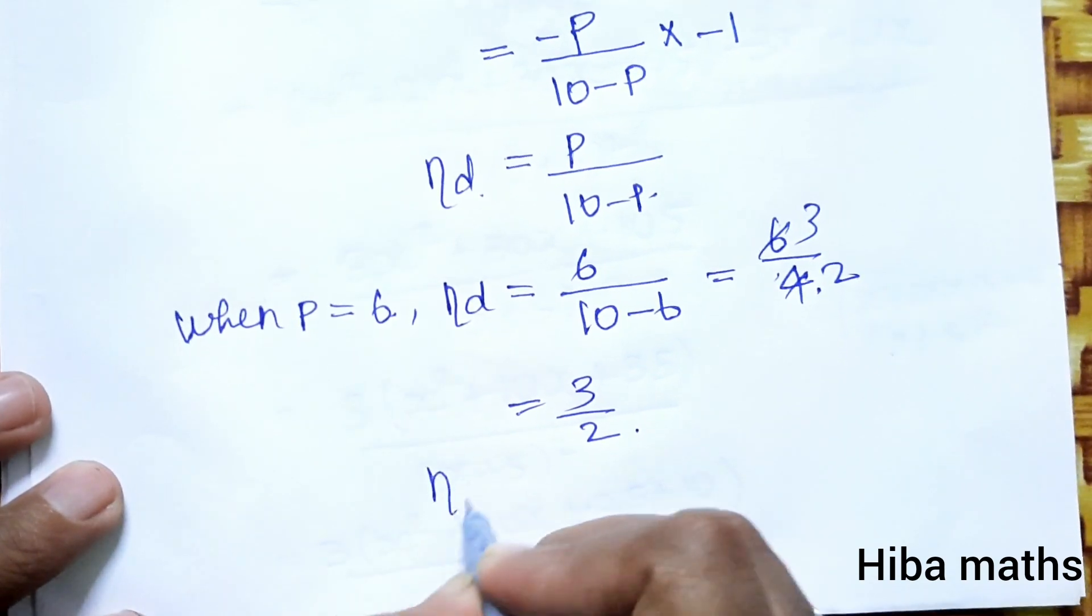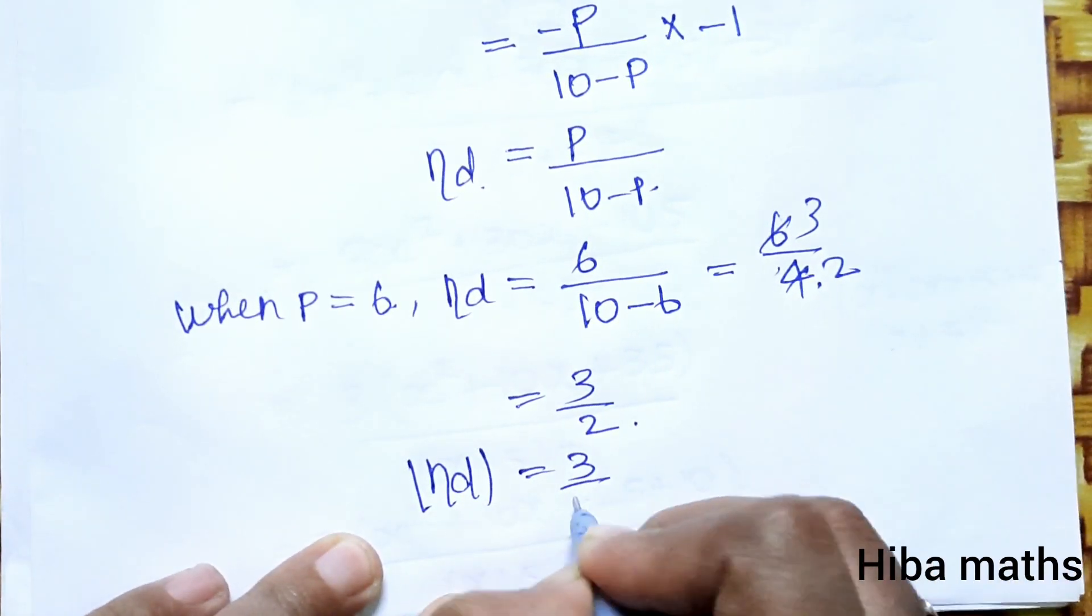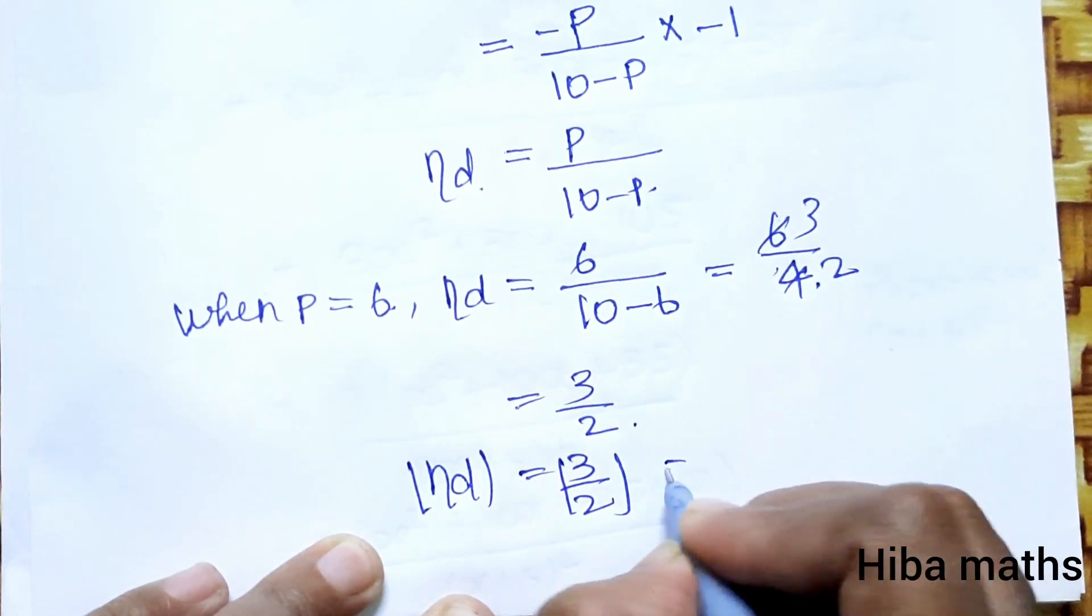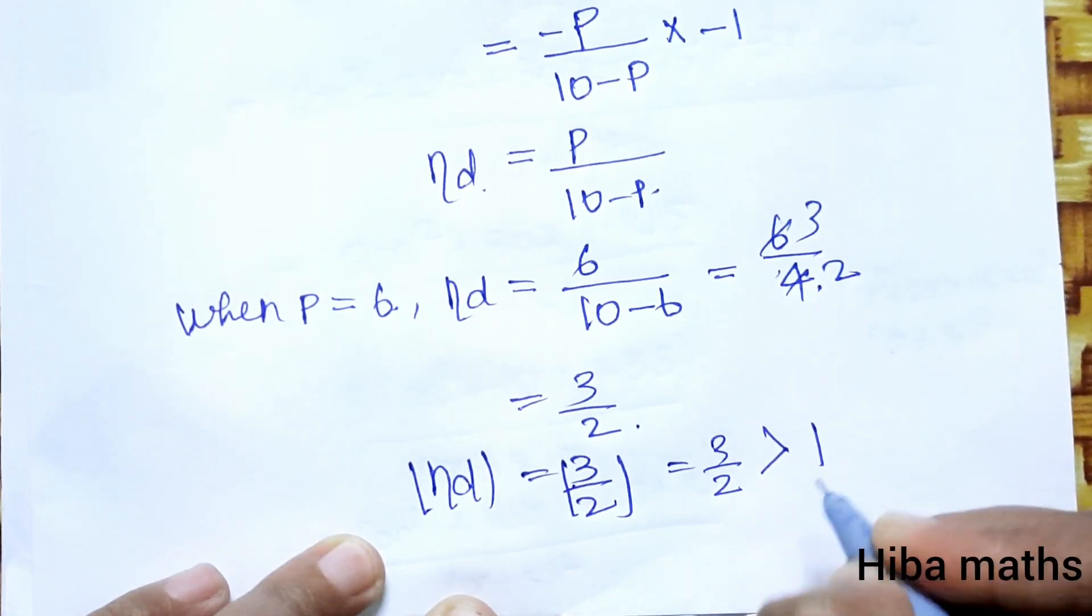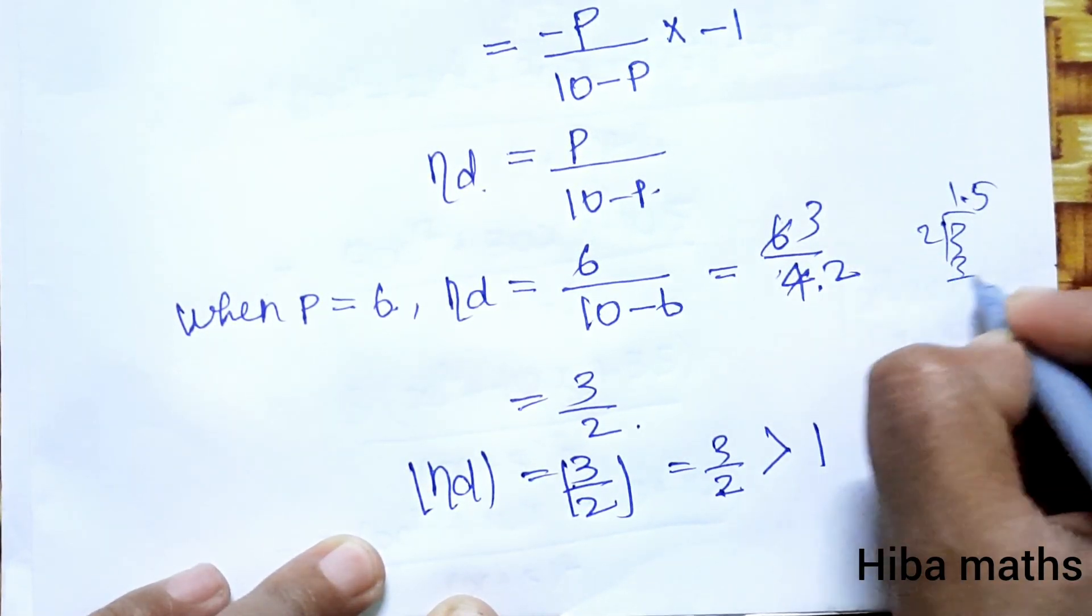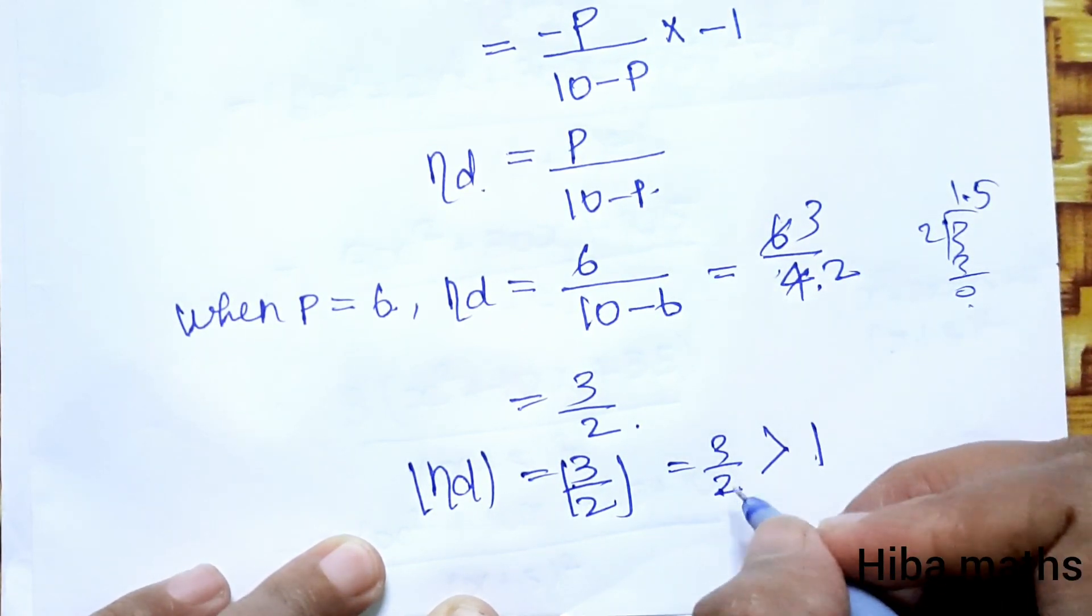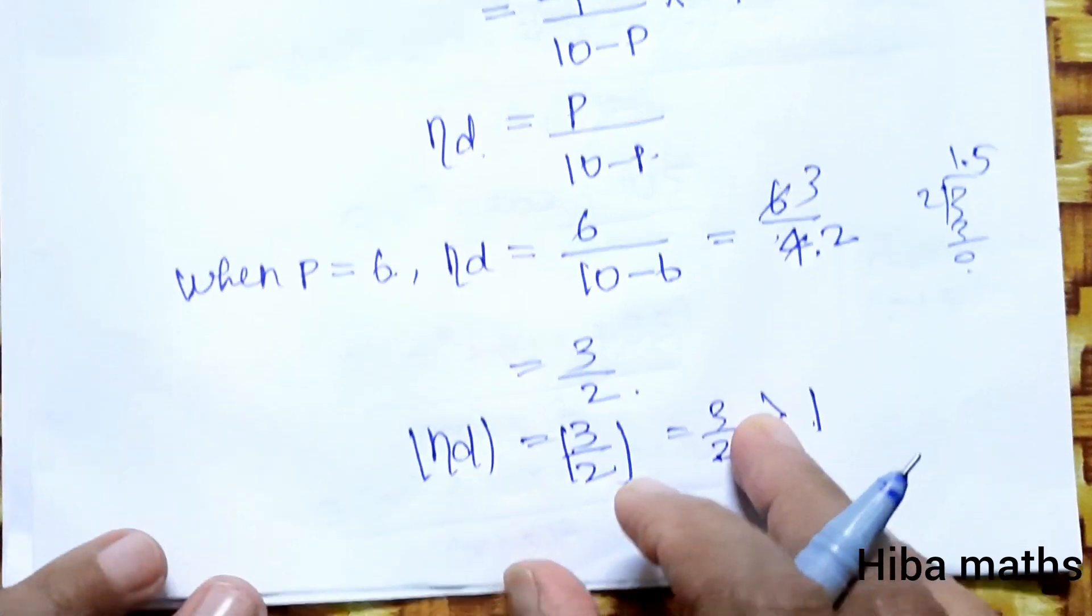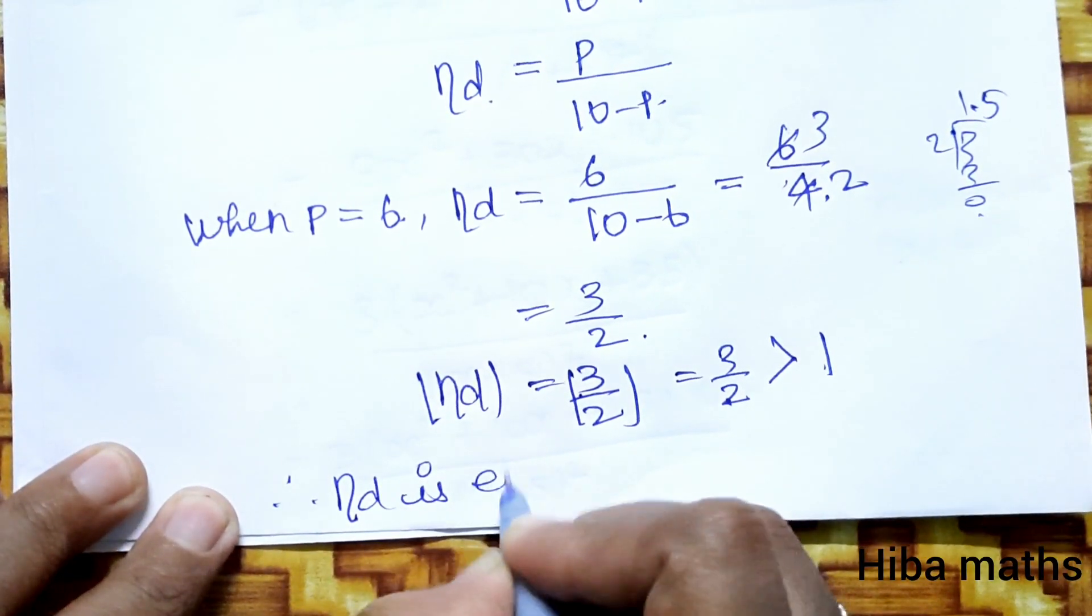η_d = 3/2, which is greater than 1. 3 divided by 2 equals 1.5. Since 1.5 is greater than 1 and positive, η_d is elastic.